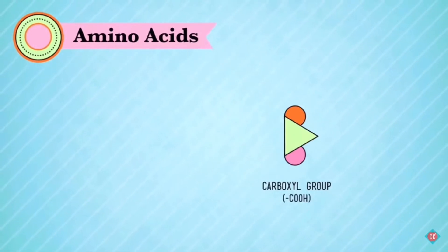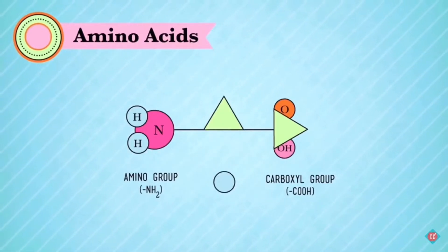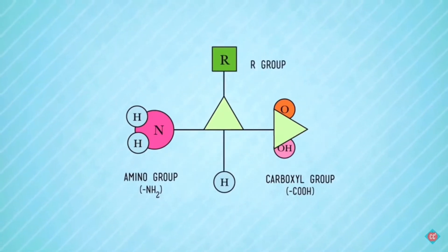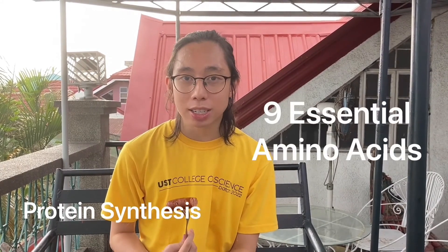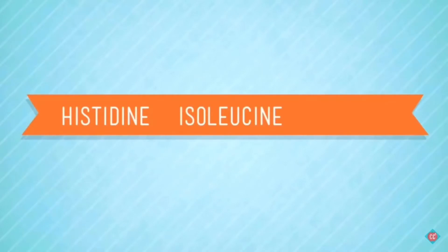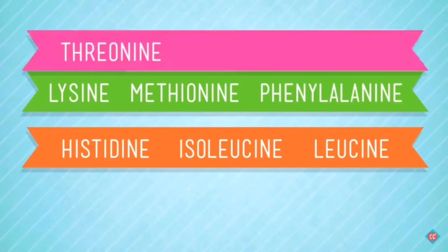Amino acids have a carboxyl group on one end and an amino group on the other. The amino group contains nitrogen, and although nitrogen makes up 78% of our atmosphere, we still need to find a way to get it into our body — so we have to eat foods high in protein, like eggs and meat. In the middle of the amino and carboxyl group is carbon, which shares one electron with hydrogen and the other with an R group. Whatever side group is in the R group determines what kind of amino acid it is. Protein synthesis is only possible if you have all the necessary amino acids, and there are nine amino acids we can't make ourselves: histidine, isoleucine, leucine, lysine, methionine, phenylalanine, threonine, tryptophan, and valine.